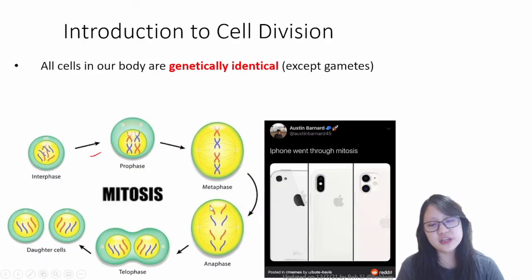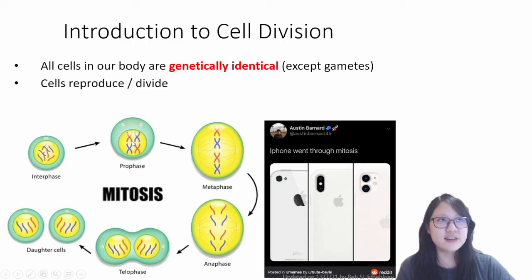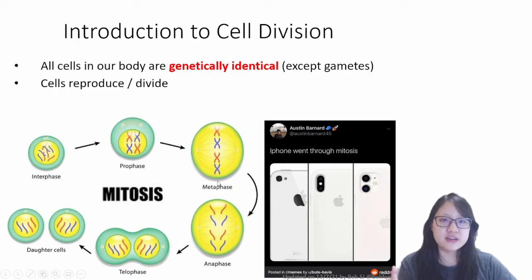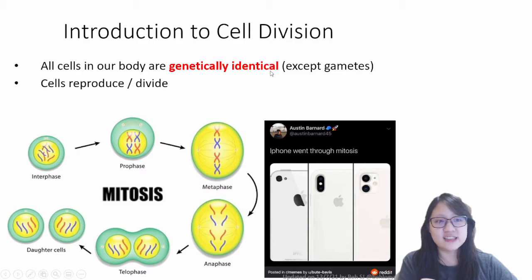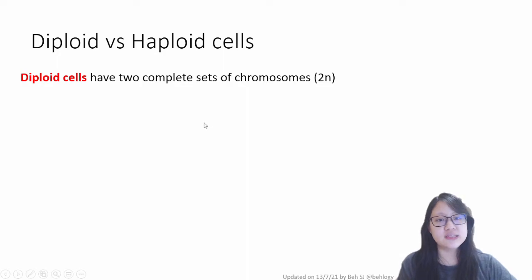Cell division is really important because we all started from just one cell, and from one cell we became two, then from two cells we became four, and that continued again and again until we are who we are now. Every single cell in our body is genetically identical, except gametes, and we owe this to cell division. Cell division is where cells reproduce and divide to pass copies of genes to daughter cells.